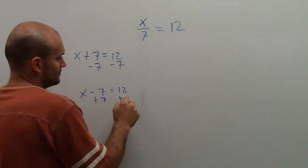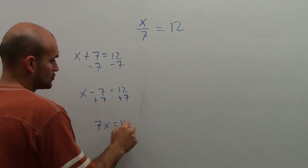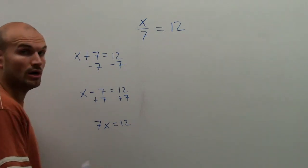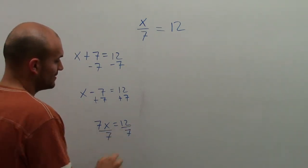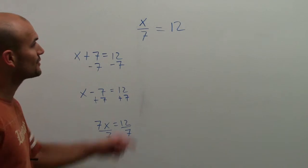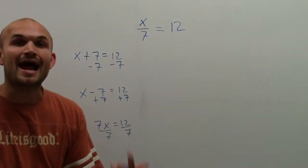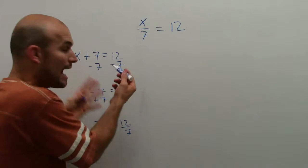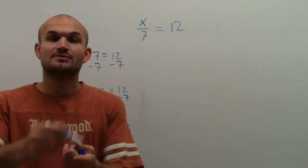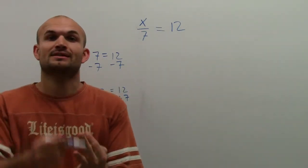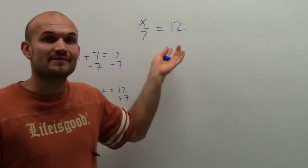What if we had 7 times x equals 12? Well, then we divide by 7. So what do you think we're going to do when we have x divided by 7? We have to use inverse operations. There are only so many: adding, subtracting, multiplying, dividing. What does x over 7 mean?